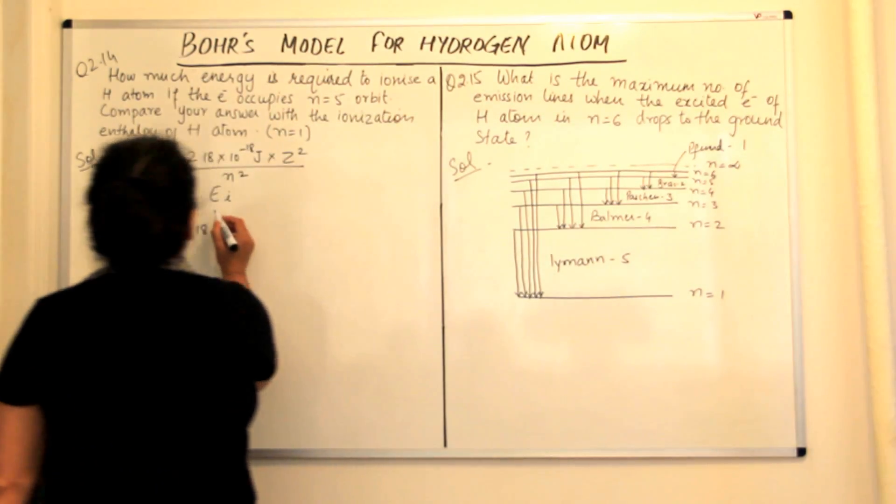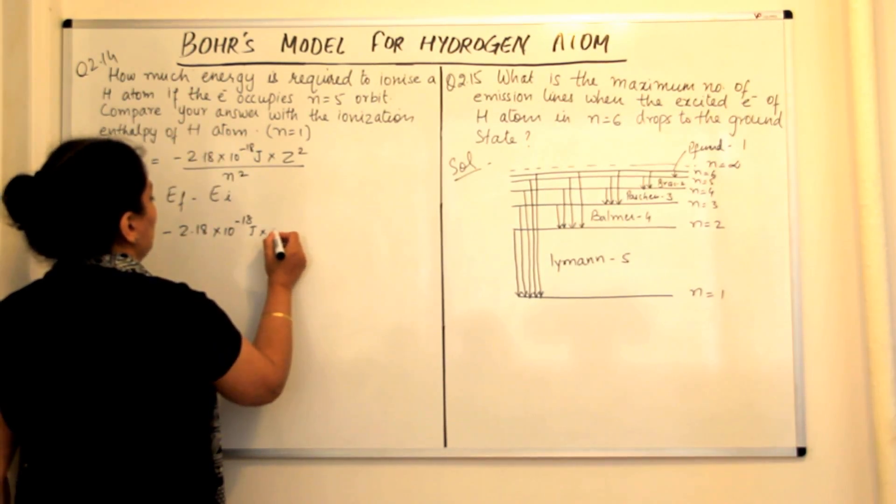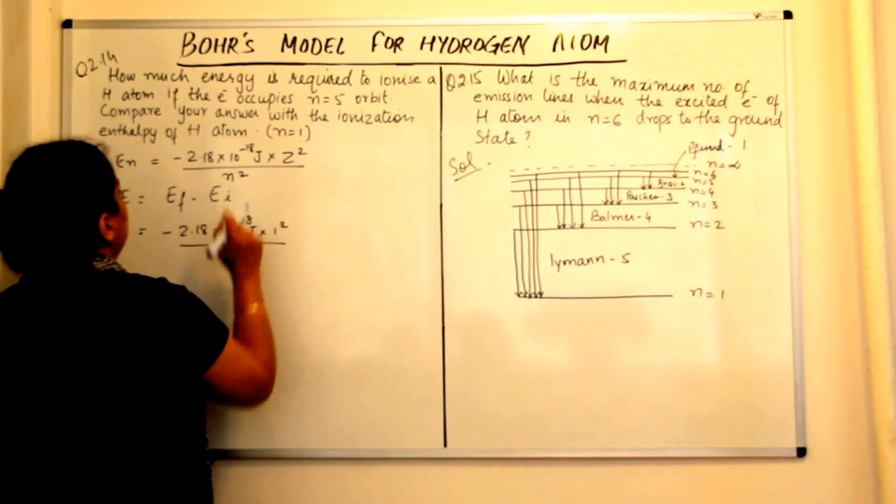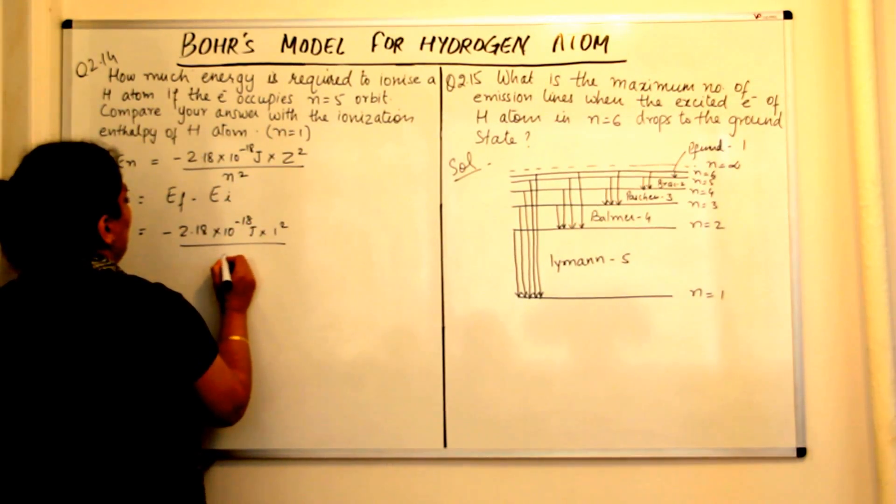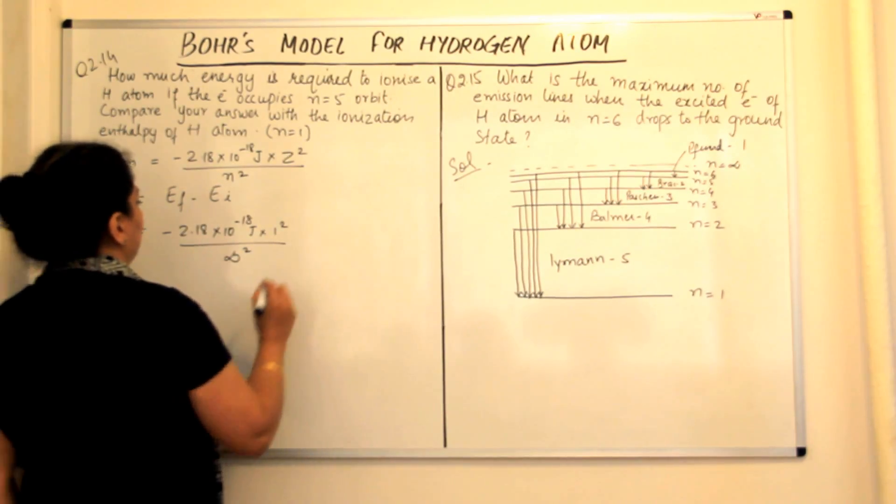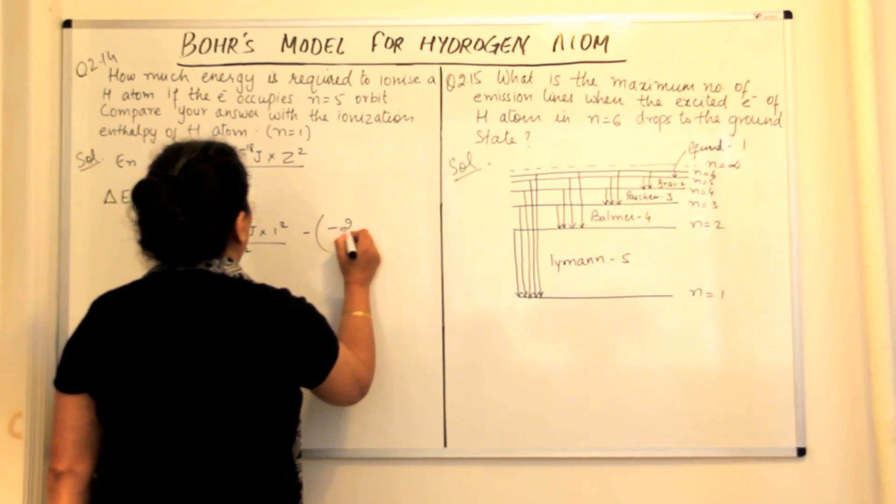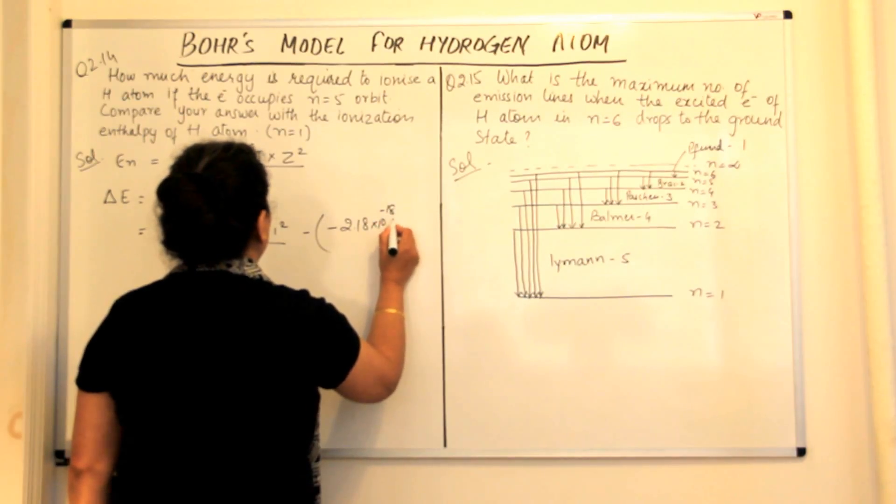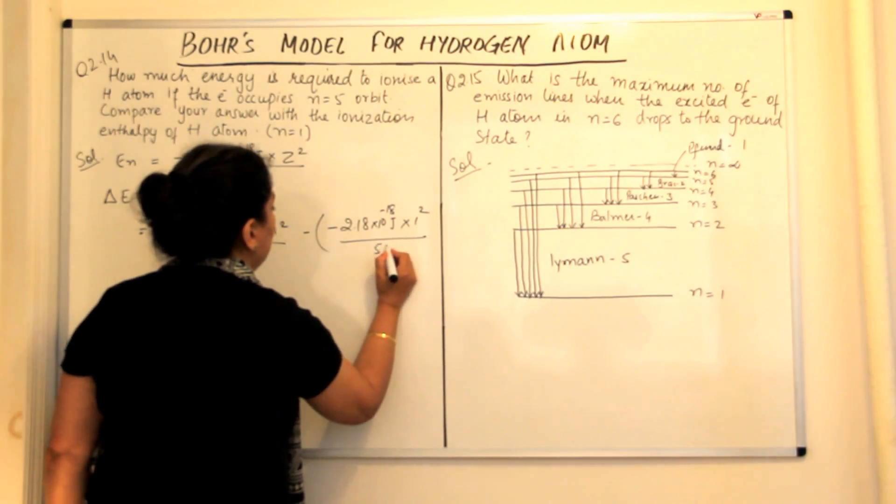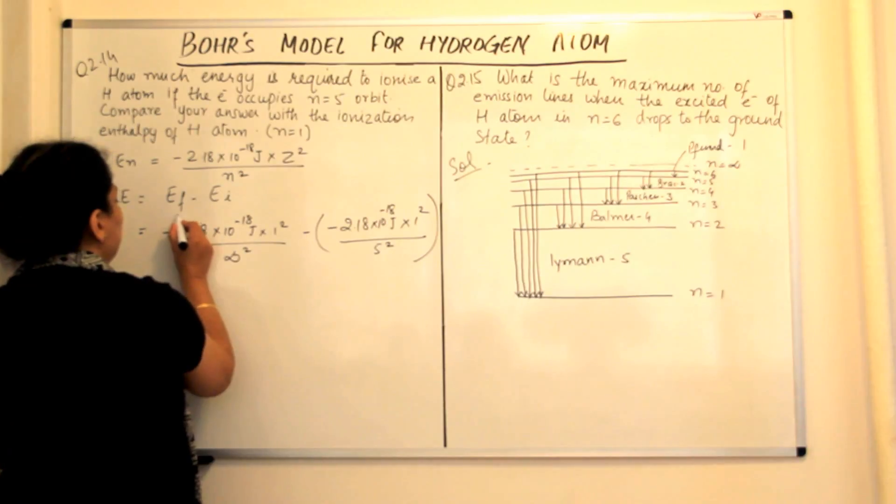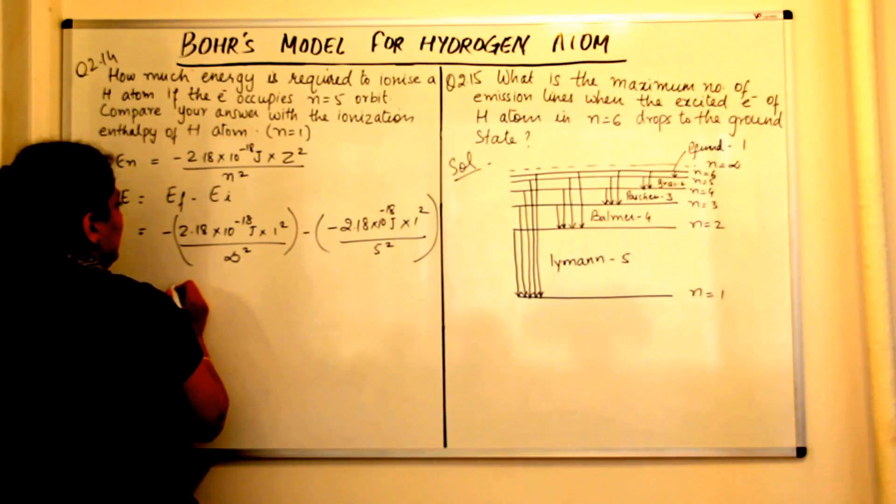So it would be 2.18 into 10 to the power minus 18 joules, and for hydrogen z is one square upon n square. The final n here would be infinity, so it would be infinity square minus minus of 2.18 into 10 to the power minus 18 joules into one square upon 5 square. This value is 1 upon infinity, which is 0, therefore all of this becomes equal to 0.